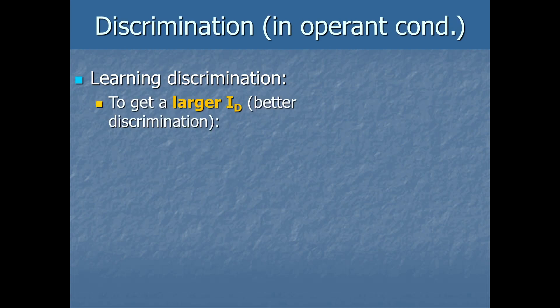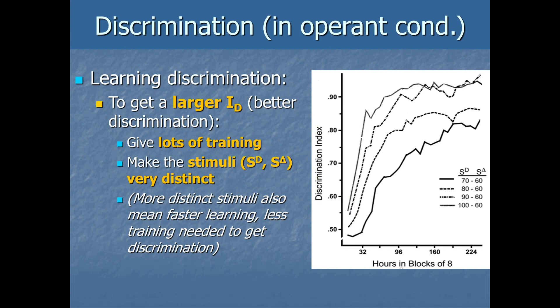In other words, imagine you want a larger discrimination index. Like, you want your dog to respond differently to two different verbal prompts. What can you do to get the most discrimination or to get that taught the quickest? So first, giving lots of training will get you a larger discrimination index. In other words, it'll go up over time as you have more experience, and the more experience you get, the higher that gets, the larger the index of discrimination. That's kind of obvious, but what else?